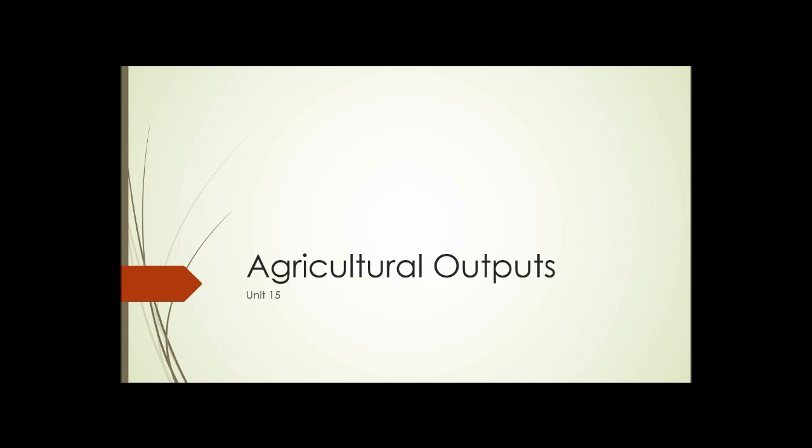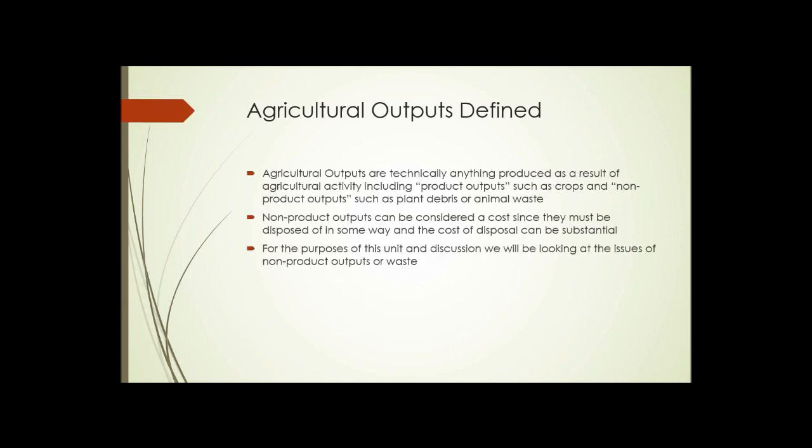Unit 15: Agricultural Outputs. What are agricultural outputs? Back at the beginning of this course, we had a unit on agricultural inputs — anything added to or brought in to help the production of whatever was being produced, whether crops or animals. Outputs are the result of agricultural activity.